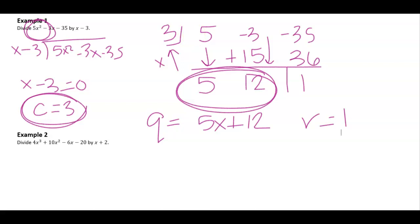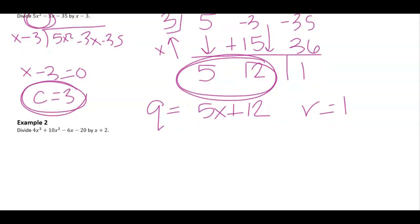Let's look at a second example. If I want to divide 4x cubed plus 10x squared minus 6x minus 20 by x plus 2, I say, okay, x plus 2 equal to 0. That's at x equals negative 2, or we can say c equals negative 2.